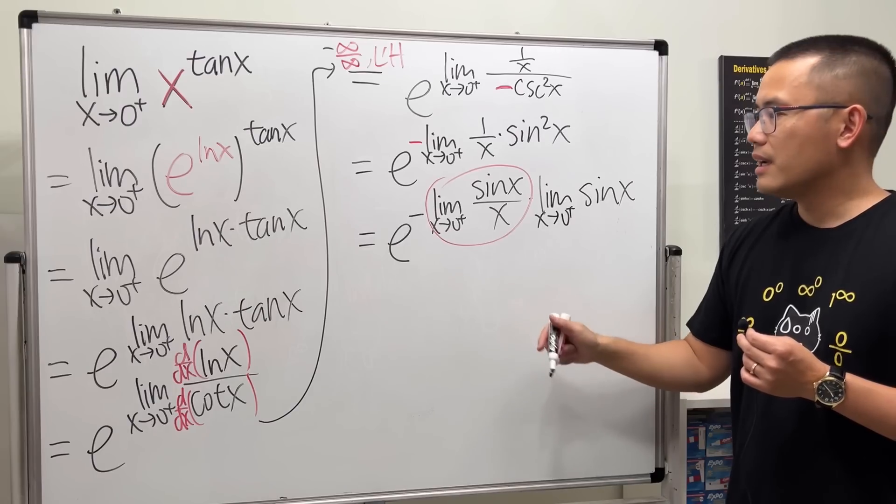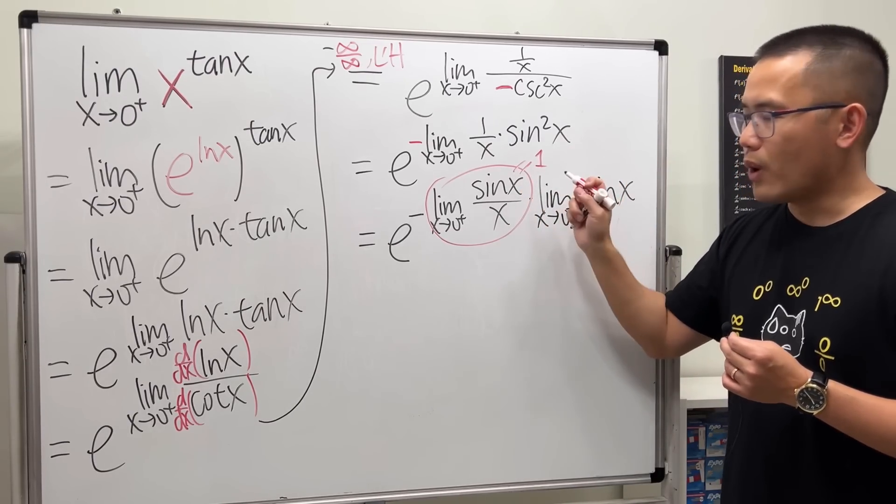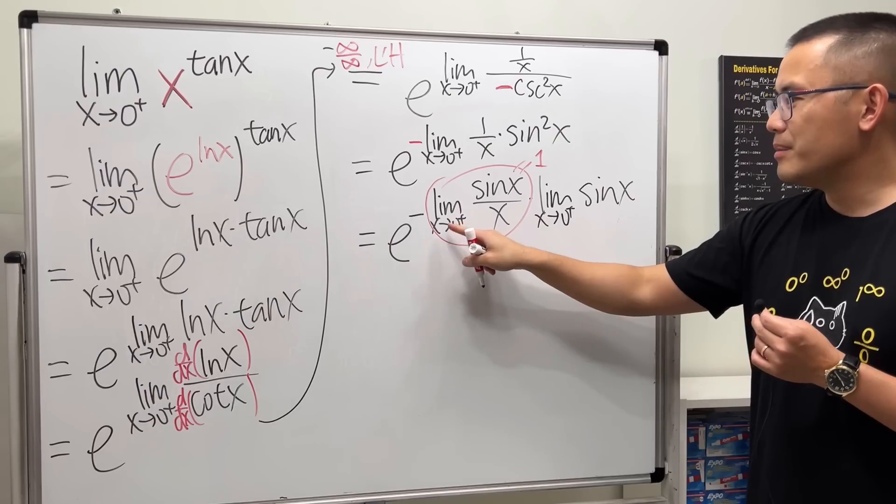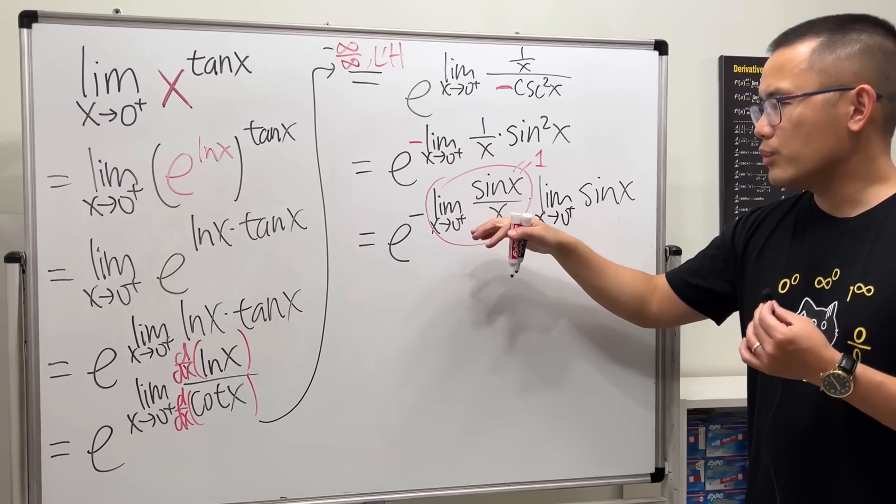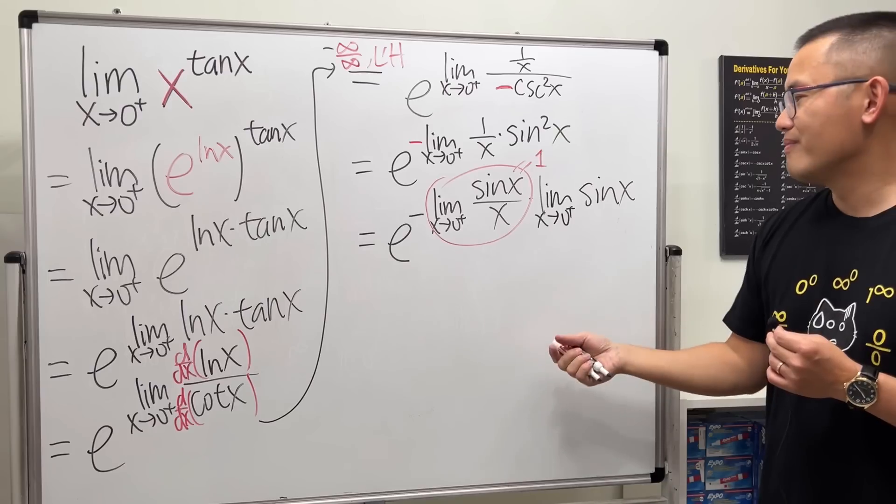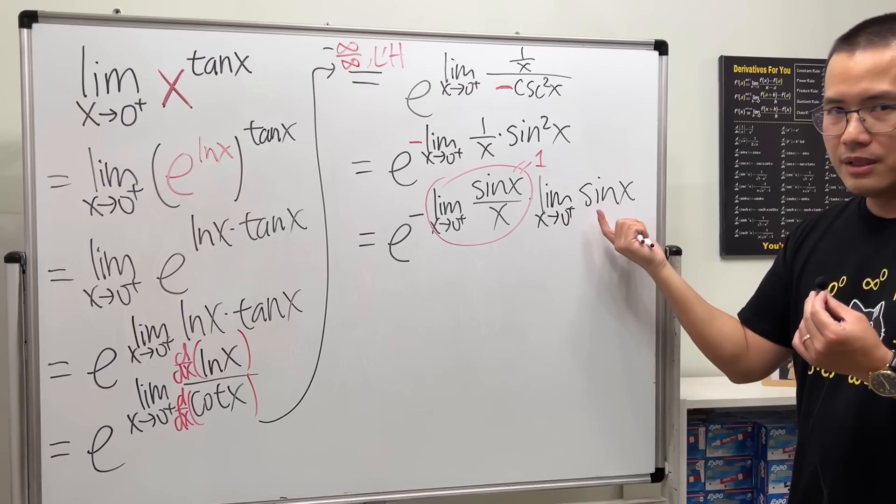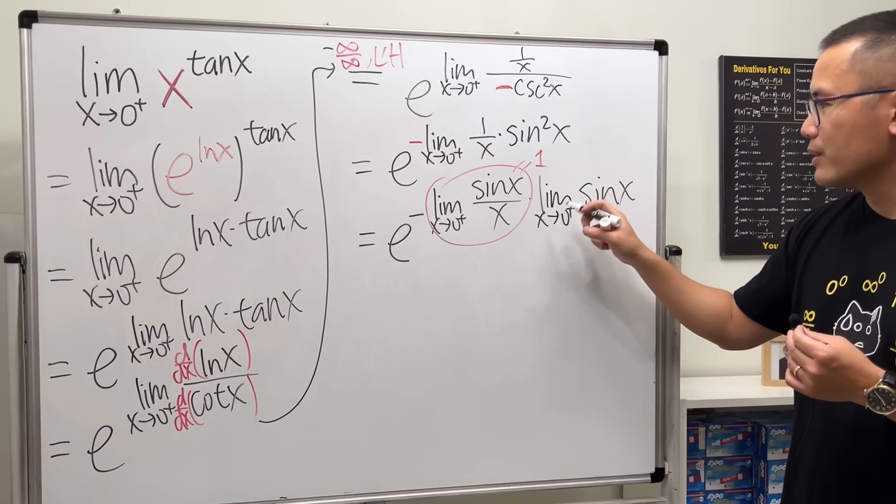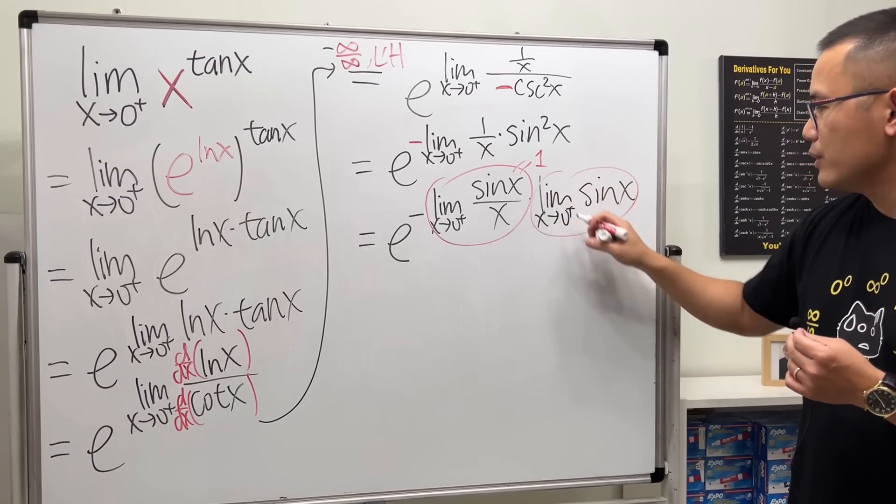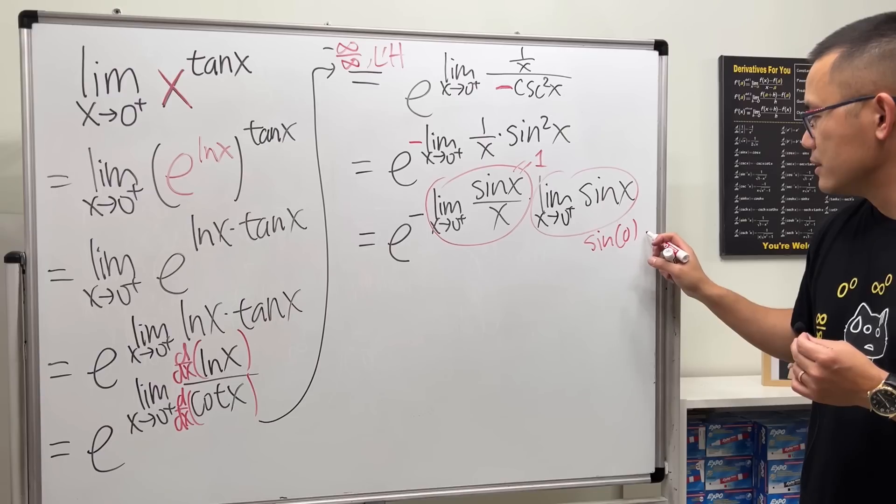The limit of a product, it's a product of the limit. So we can just focus on this limit and then focus on this limit. This right here is a standard result that is equal to one. The limit as x approaching zero or zero plus, sine x over x, you will get one. And then this right here, you can just plug in zero in here. Sine is a continuous function, so this will give you sine zero, which will just give you zero.